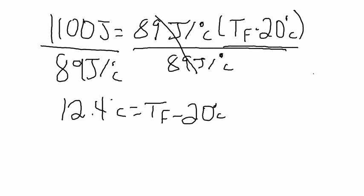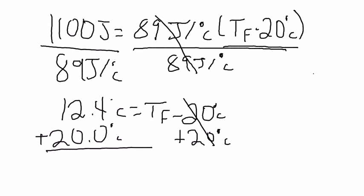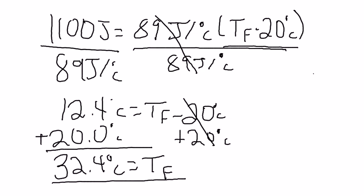Now, unlike when we were calculating for the initial temperature, this time it's much easier. All you need to do is do the inverse of this subtraction of 20 degrees Celsius — so we need to add 20 degrees Celsius to both sides. Once you add it, you will get 32.4 degrees Celsius is equal to temperature final. It was a much easier way to derive the final temperature than the initial. You didn't need to change any negative sign because we were solving for final temperature this time.